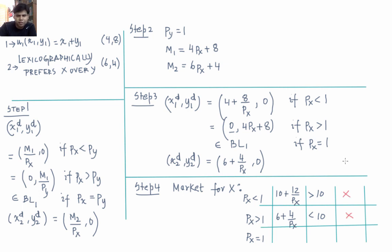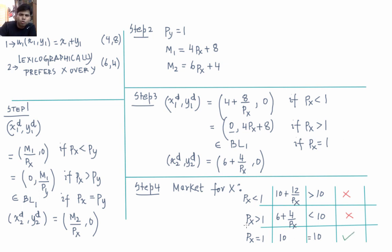Now let's consider the last case: px = 1. When px = 1, individual 1 is indifferent and can choose anything on his budget line. Individual 2 will pick 6 + 4/1 = 10 units of x, which is precisely equal to the supply of x. So if individual 1 picks 0 units of x, we are in equilibrium. At px = 1 and py = 1, we have a competitive equilibrium.